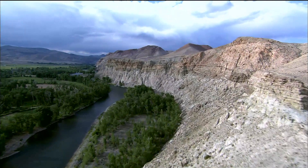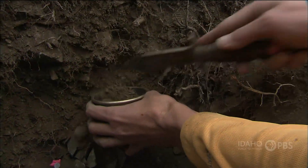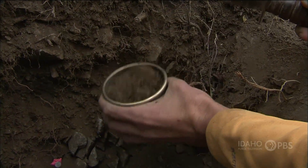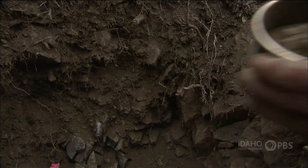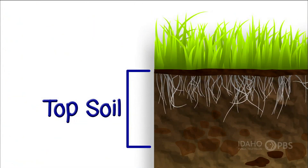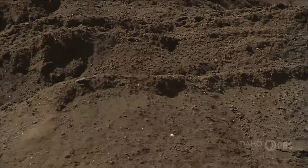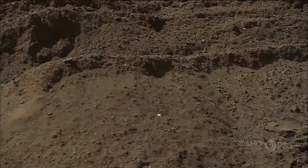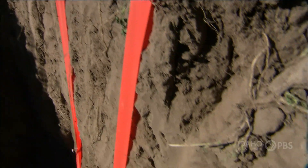Soil forms in different layers on the Earth. When soil scientists study layers of soil, they call it studying the soil profile. Topsoil is the layer you see, the layer you typically walk on. It contains dark organic material, which is made up of decayed plant and animal matter. Topsoil can be about 6 inches thick.